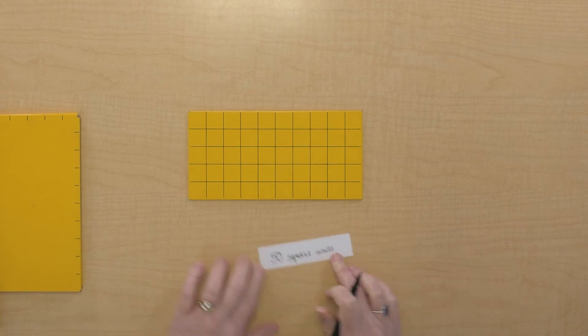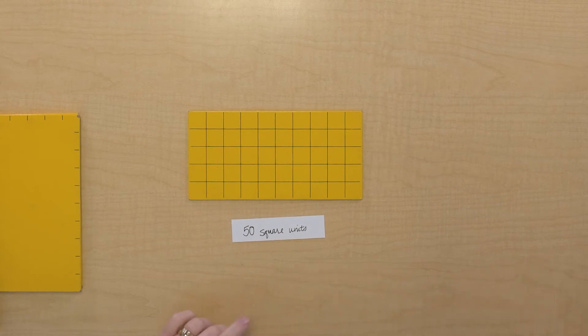That is 50 square units. So this measurement of the surface of a shape is called finding the area. We just measured the area of this rectangle. Now, do you notice we use these squares to measure?